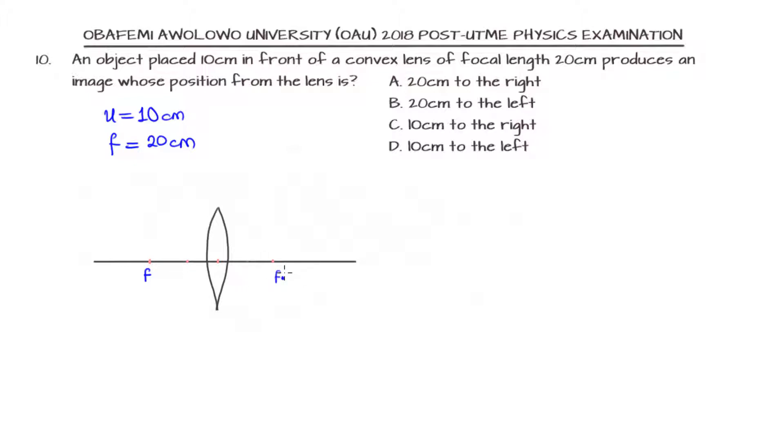If I have the focal length here, I'm going to have f on the other side. The object is placed 10 centimeters, and since f is 20, the 10 will be between f and the center of curvature. Rays passing through the image, when it gets to the lens, will go and pass through the focal point on the other side. Another ray will pass through the center of curvature, the middle of the lens.